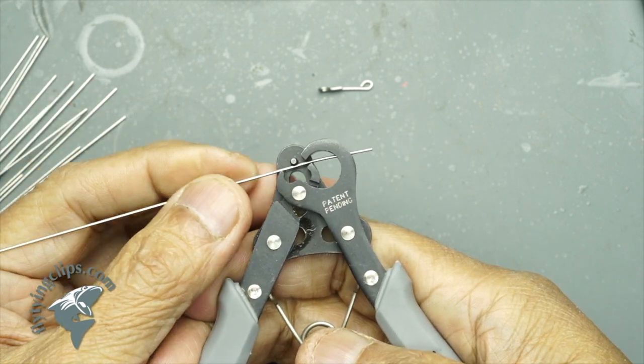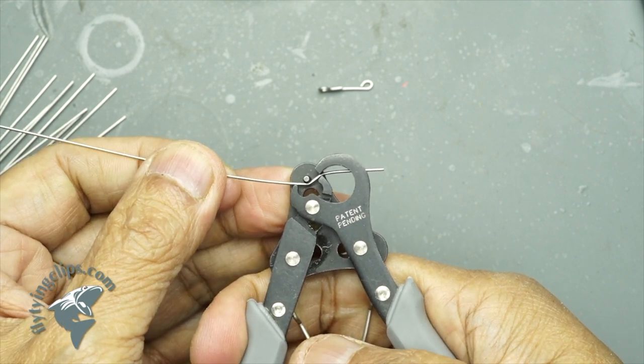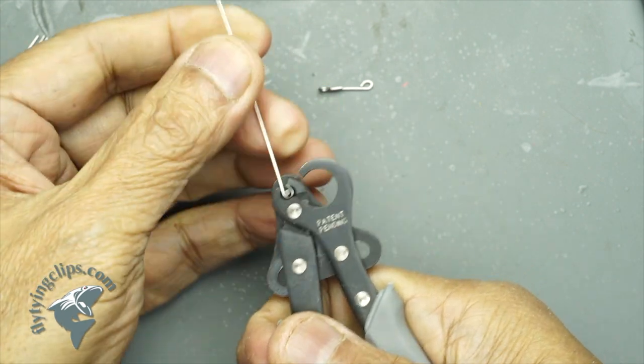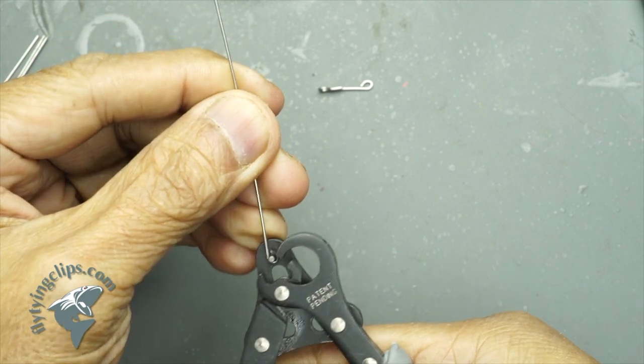Squeeze the jaws and it will actually trim the excess. Do this slow but there you go. And then you continue to squeeze and it creates that little loop.